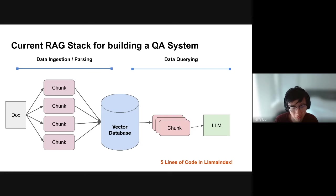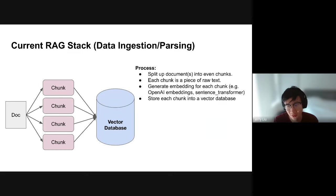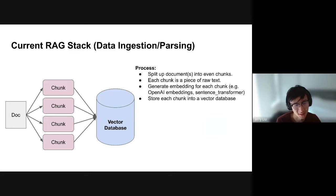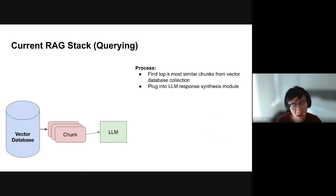Once the data is in a vector database, you set up retrieval augmented querying — you retrieve the top K most similar chunks and plug this into your LLM synthesis module to get back a response. This whole idea of chat-with-your-data should be familiar. One of the nice things about LlamaIndex is it's tailored to help you set up stacks like this in about five lines of code. There are complexities if the set of chunks overflows the context window of the LLM, and LlamaIndex has abstractions to help deal with that.